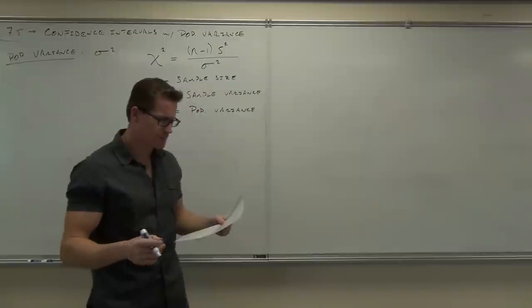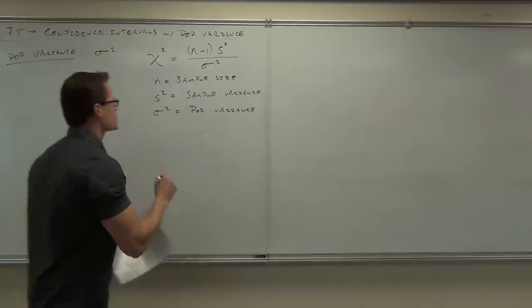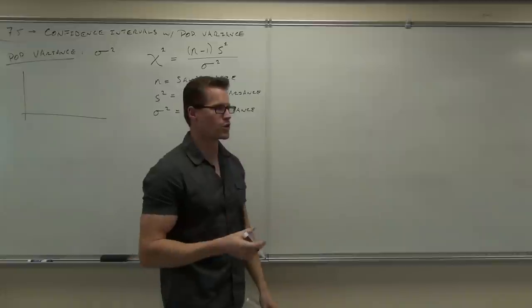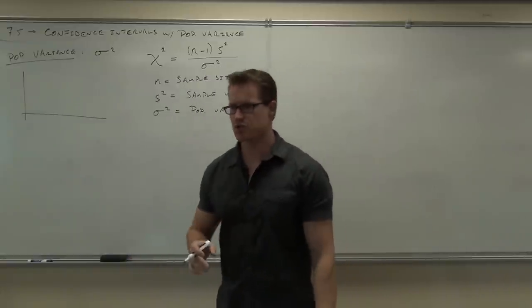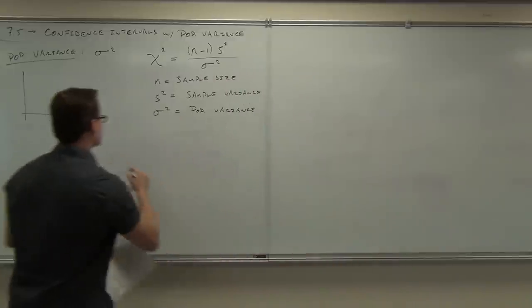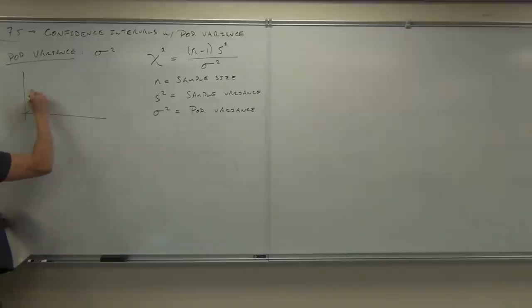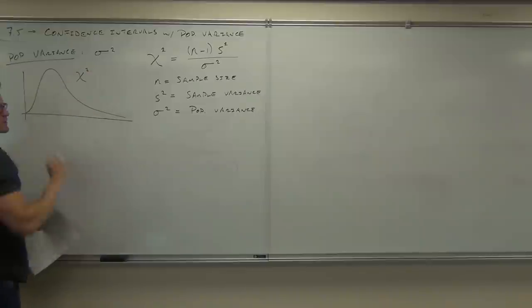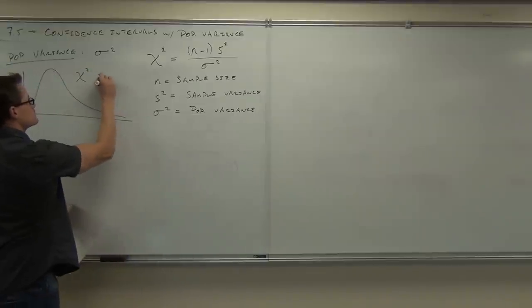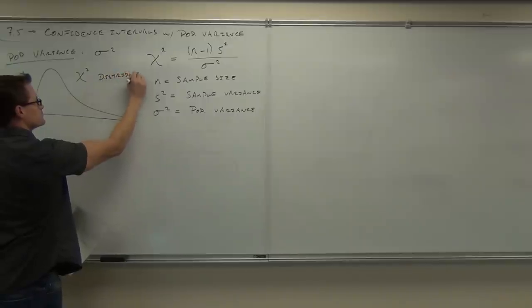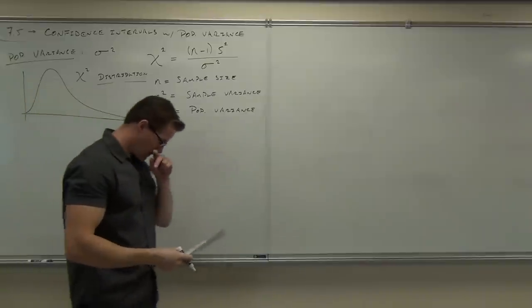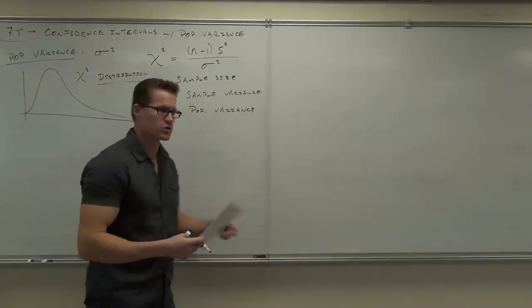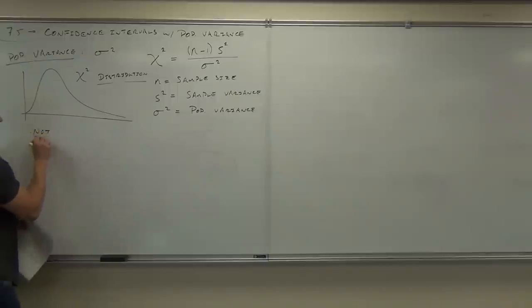A couple of things about the chi-square distribution I'm about to show you: it looks similar to a normal distribution, but I've got to warn you — this thing is not a normal distribution. It is kind of bell-shaped, but it's not symmetrical. This thing starts at 0, shoots up, and has a tail to the right. It is definitely not symmetrical.